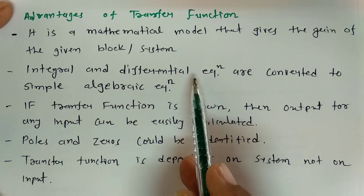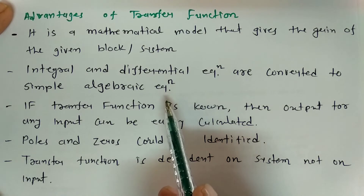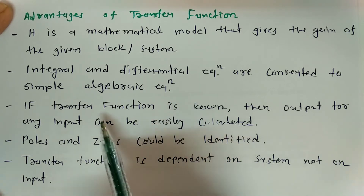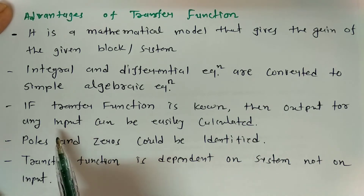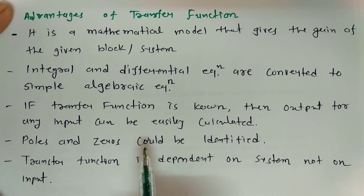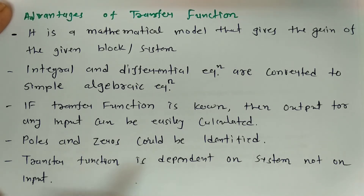By using the Laplace transform, we have polynomials in the S-domain which can be used for analytical reasoning of any given system. If the transfer function of a system is known, then the output can be calculated for any given input. Poles and zeros can also be calculated. Transfer function is independent of the inputs — it is based on the system's response.